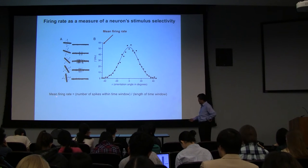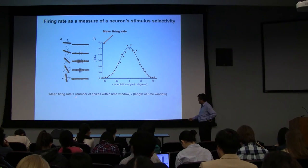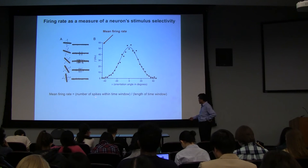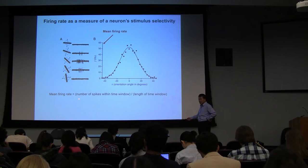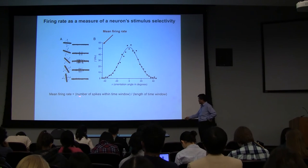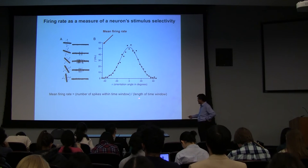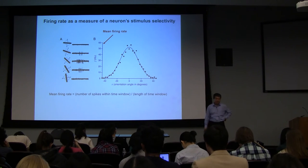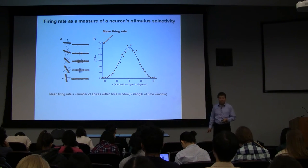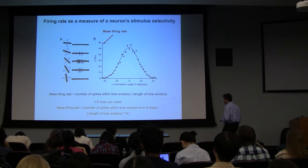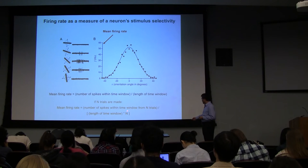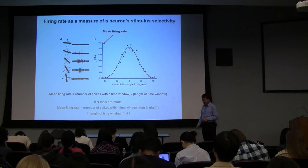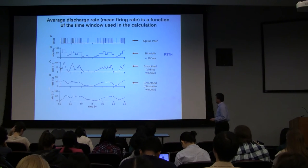The mean firing rate is computed by this formula: number of spikes within a time window divided by the length of that time window. If you have multiple repetitions, you divide the total number of spikes by the number of repetitions as well. That's the basic formula. If N trials were made, you use that formula. It's pretty straightforward.